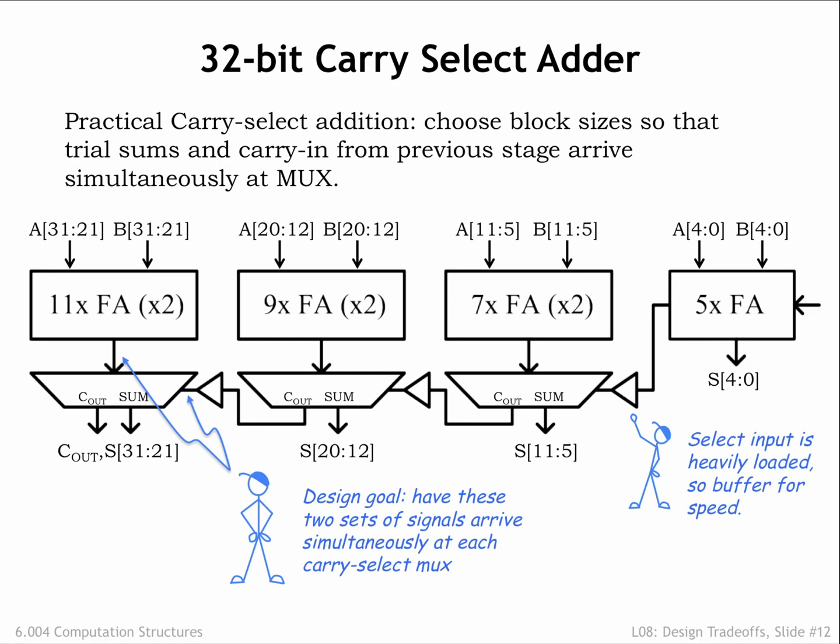This carry-select adder is about 2.5 times faster than a 32-bit Ripple carry adder at the cost of about twice as much circuitry. A great design to remember when you're looking to double the speed of your ALU!